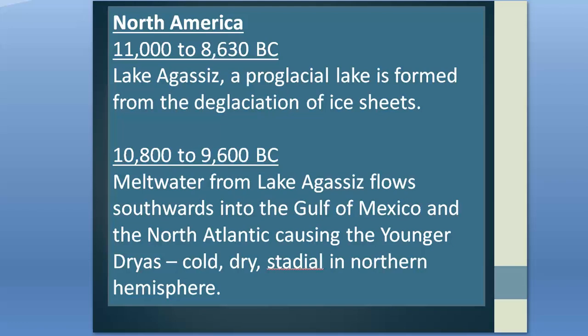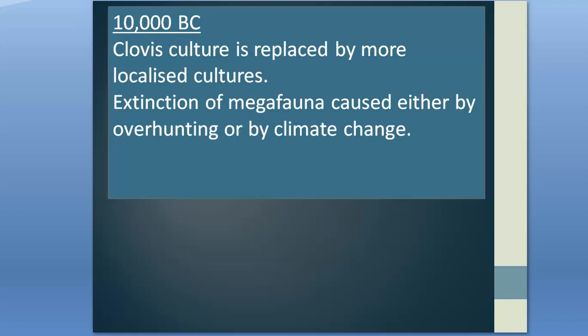The drought affected the existing Natufian culture. From about 10,000 BC, in the midst of the Younger Dryas, the Clovis culture began to be replaced by more localized regional cultures. The most commonly held view for the end of the Clovis culture is that the decline in availability of megafauna, along with an increase in a less mobile population, led to the diffusion of cultural traditions across North and Central America.